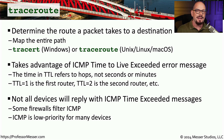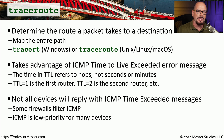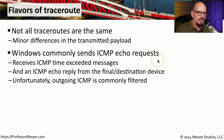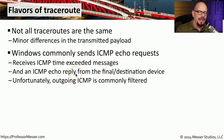One challenge with ICMP is that many firewalls and other devices will disable or filter ICMP messages. So although the time to live may have been exceeded, no ICMP message is sent back because it's being filtered. In your traceroute output, you'll know ICMP is being filtered when you see an asterisk instead of statistics. In Windows, ICMP echo requests are used to send information, and we expect to receive ICMP Time Exceeded messages, plus an ICMP echo reply once we reach the destination.